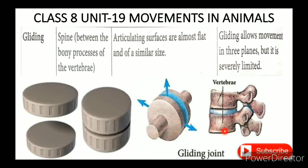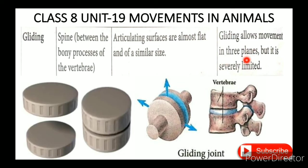The gliding joint: the articulating surfaces are almost flat and of a similar size. Gliding allows movement in three planes, but it is severely limited.